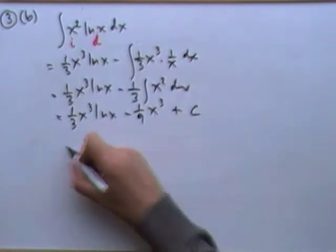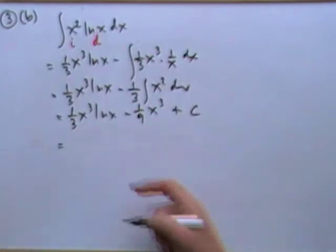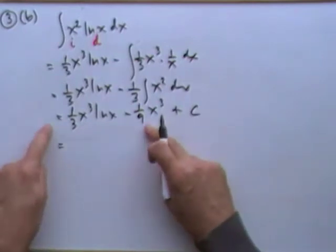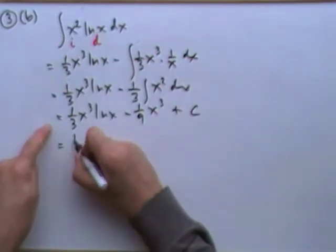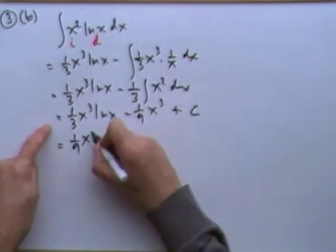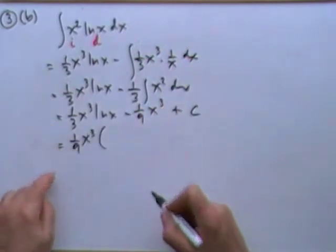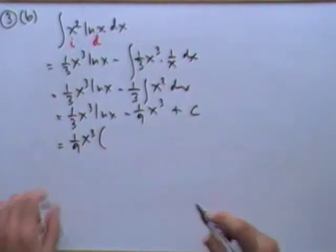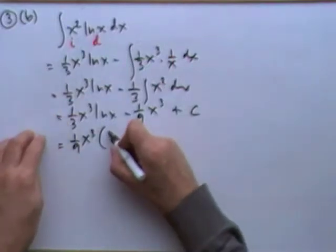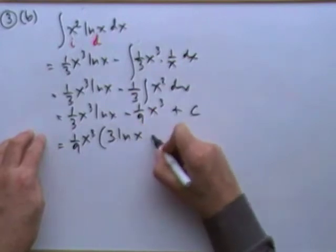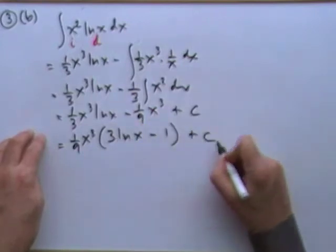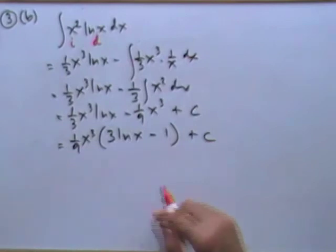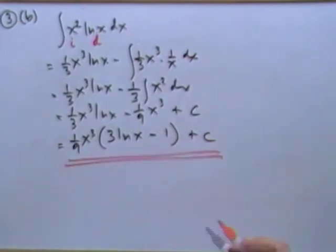I always prefer to make it neater. Take out common factors. The worst fraction I've got is 9, so I'll take out a ninth. x cubed in both terms. If I'm taking out a factor of a ninth, everything inside will have to be 9 times bigger than it was. So that'll make that a 3 ln x minus 1, and I'll just leave that c separate.